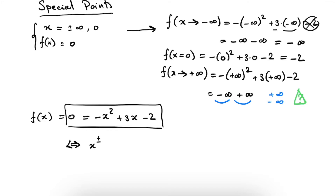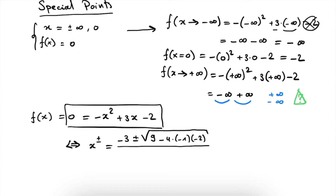There will always be two solutions to a quadratic equation. x equals minus 3 plus or minus the square root of 9 — where 9 comes from squaring minus 3 — minus 4 times minus 1 times minus 2, all divided by minus 2. Calculating this, we get minus 3 plus or minus 1 divided by minus 2. If we take the plus sign, we get minus 3 plus 1 equals minus 2, divided by minus 2, which gives us 1. If we take the minus sign, we get minus 3 minus 1 equals minus 4, divided by minus 2 to get 2.